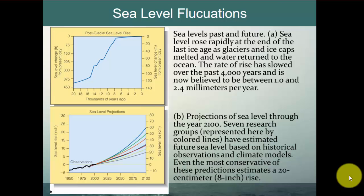Sea levels past and future: sea level rose rapidly at the end of the last ice age as glaciers and ice caps melted and water returned to the ocean. The rate of rise has slowed over the last 4,000 years and is now believed to be somewhere between 1 and 2.4 millimeters per year. Since about 1992, satellite altimetry and tide gauges are beginning to show sea level rise closer to 3 to 3.5 millimeters per year.